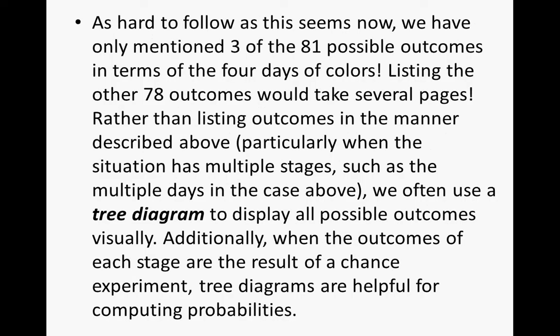As hard to follow as this seems, we have only mentioned three of the 81 possible outcomes in terms of the four days of colors. Listing the other 78 outcomes would take several pages. So rather than listing outcomes in this manner, particularly when the situation has multiple stages — such as multiple days in the case above — we often use a tree diagram to display all possible outcomes visually. Additionally, when the outcomes of each stage are the result of a chance experiment, tree diagrams are helpful for computing probabilities.